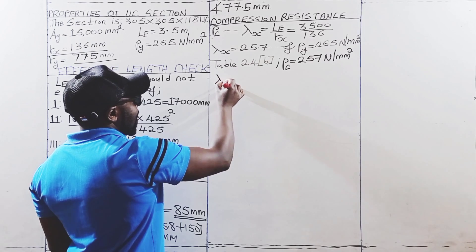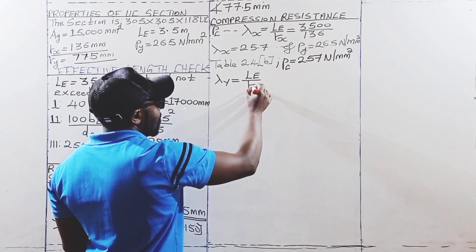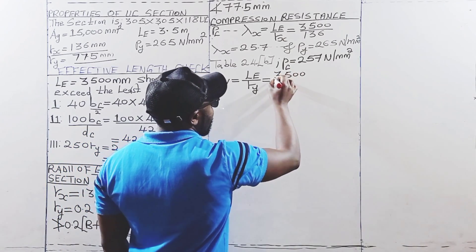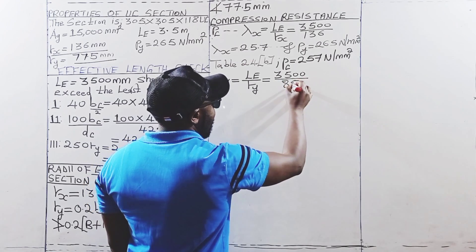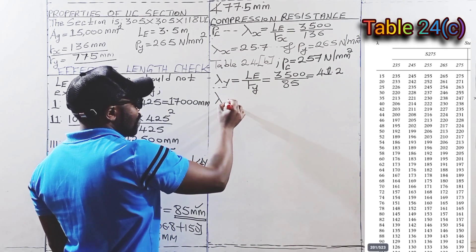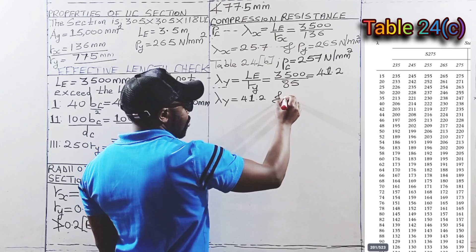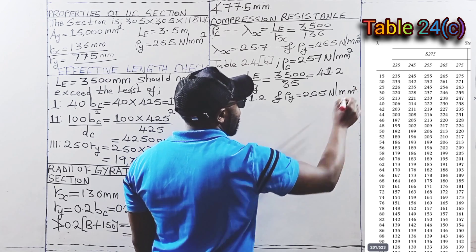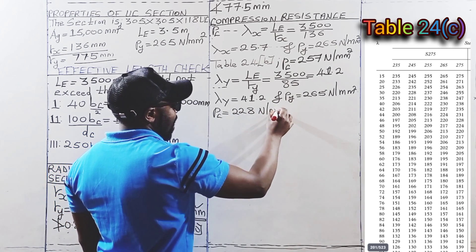The slenderness ratio about the YY axis is the effective length divided by the radius of gyration about YY: 3,500 divided by 85 millimeters, giving 41.2. With a slenderness ratio of 41.2 and steel strength of 265 N/mm², the compressive strength from Table 24c of BS 5950 is 228 N/mm².